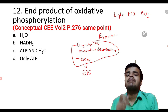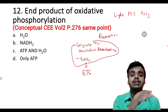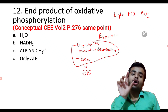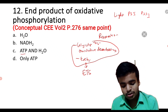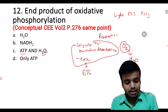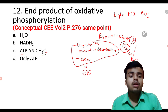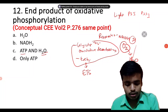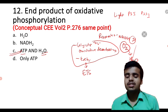ETS — Electron Transport System, also called Electron Transport Chain. In this whole system of electron transport, NADH is oxidized. The hydrogen combines with oxygen to form water, plus ATP is produced. So the product of Oxidative Phosphorylation is ATP. Atmospheric O2 is reduced to H2O. So the end product is ATP and H2O.